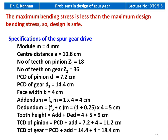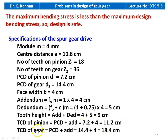Specifications of the drive: module = 4 mm, center distance = 10.8 cm, number of teeth on pinion = 18, number of teeth on gear = 36, PCD of pinion = 7.2 cm, PCD of gear = 14.4 cm, face width = 4 cm, addendum = 1 × m = 4 mm, dedendum = 1.25 × m = 5 mm, tooth height = 9 mm, tip circle diameter of pinion = 11.2 cm, tip circle diameter of gear = 18.4 cm.